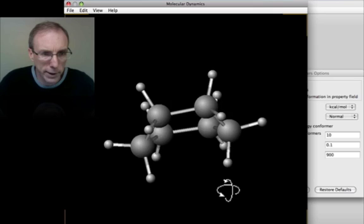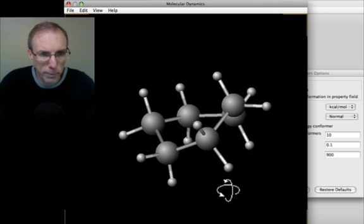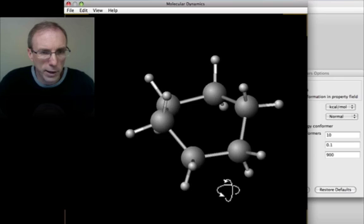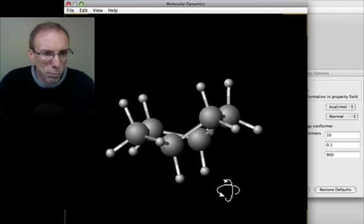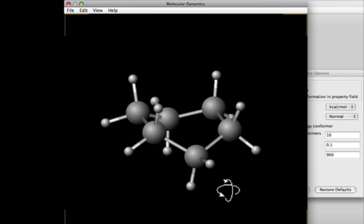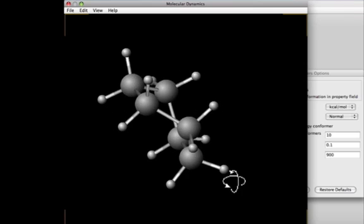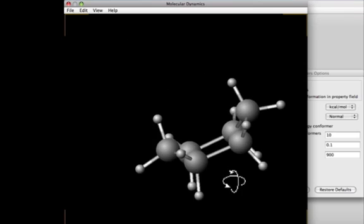It never relaxes back into that most favored chair form. The second thing to notice is that compared to cyclopentane, the ring atoms pucker at a much slower pace. So cyclohexane seems to be moving almost in slow motion as far as ring puckering goes.